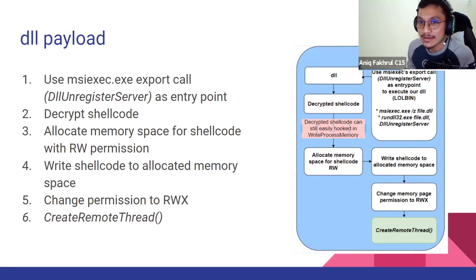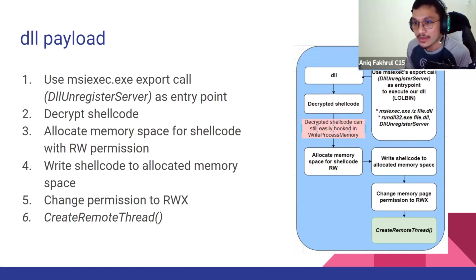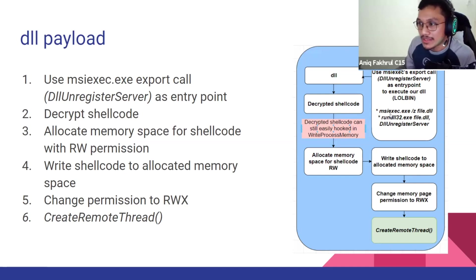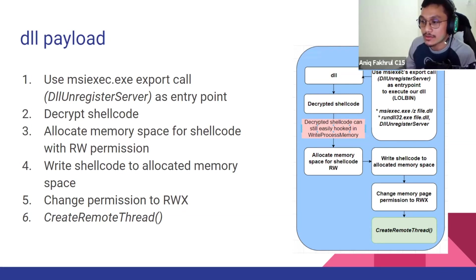I use a LOLbin approach: MSI EXEC export call to execute the DLL payload. The export call is DllUnregisterServer, which I use as the entry point in my DLL payload. You can also use RunDLL32, but I prefer MSI EXEC because it is a signed binary. The DLL workflow: decrypt the shellcode, allocate memory with write permission but without execute permission, write shellcode into memory, change the page permission to add execute permission, then create a remote thread to execute the shellcode in memory.